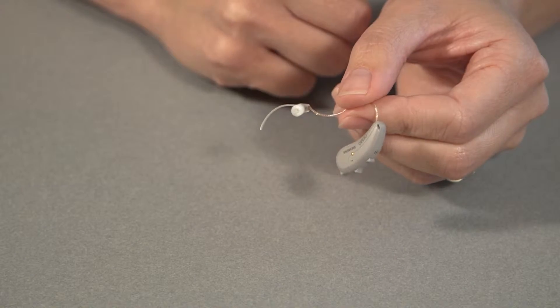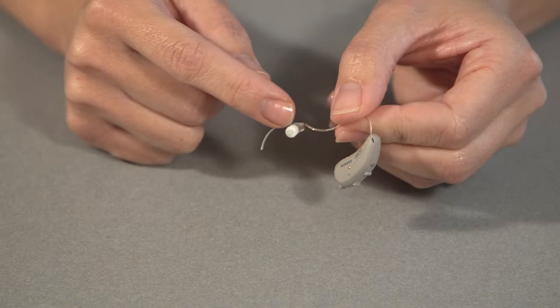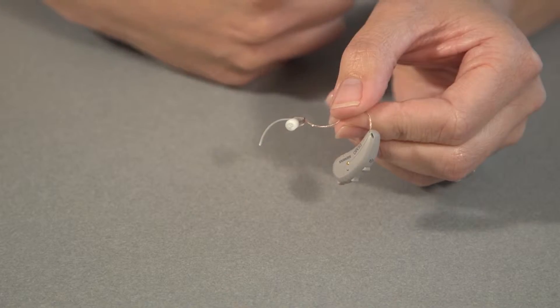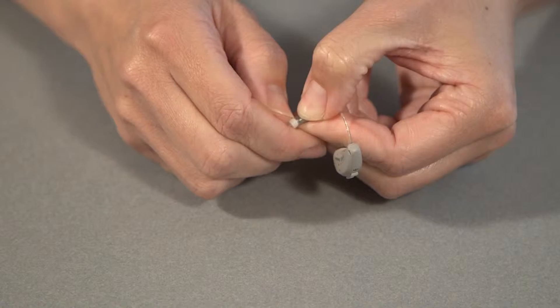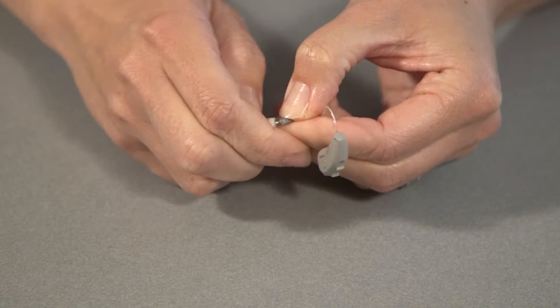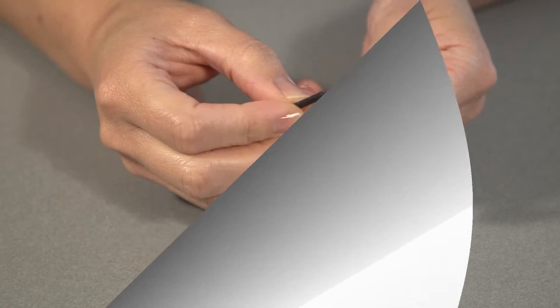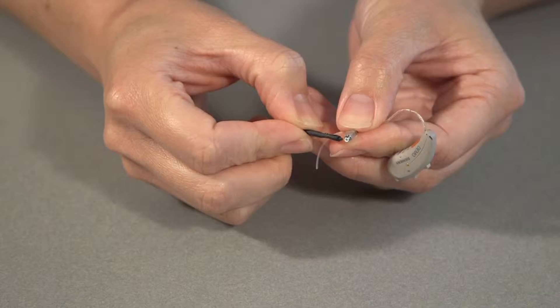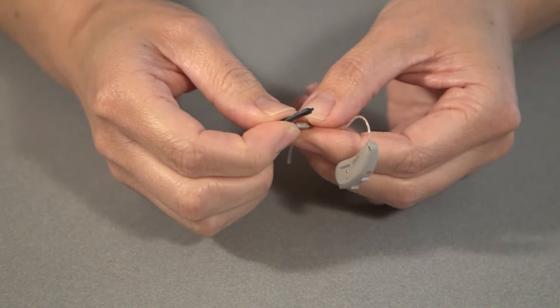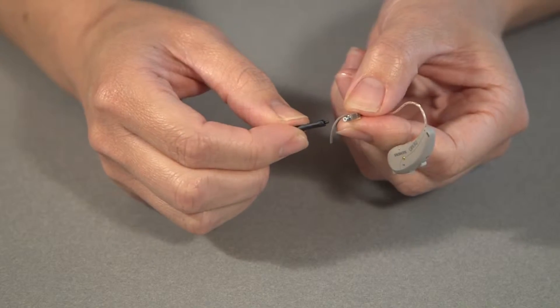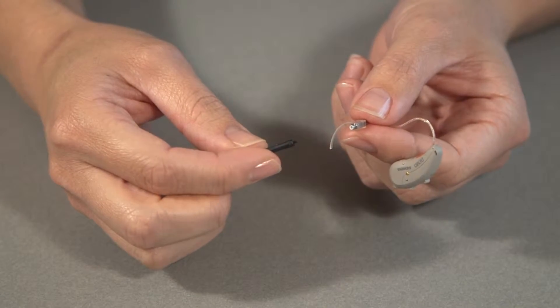The next thing you want to do is replace the dome and the wax trap that's behind the dome. In this case it's a click dome so you want to sort of get your nail behind the dome and just flick it off like that. The wax trap is the little white ring that was behind the dome and that is there as sort of a second line of defense to prevent wax from getting into the receiver.